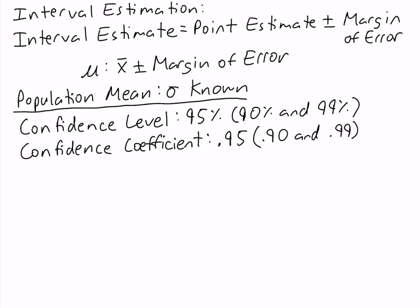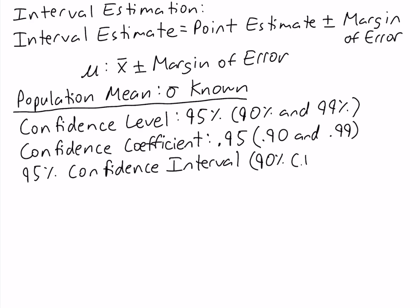If our interval estimate is constructed at a 95% level of confidence, we call it a 95% confidence interval. Similarly, if our interval estimate is constructed at a 90% confidence level, we call it a 90% confidence interval. And if it's at 99%, a 99% confidence interval.